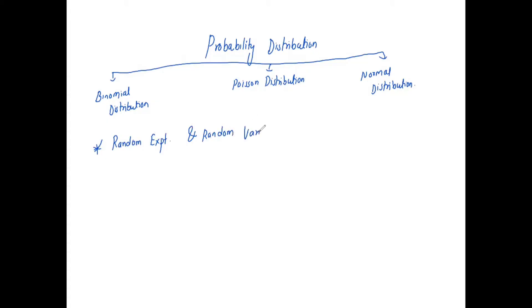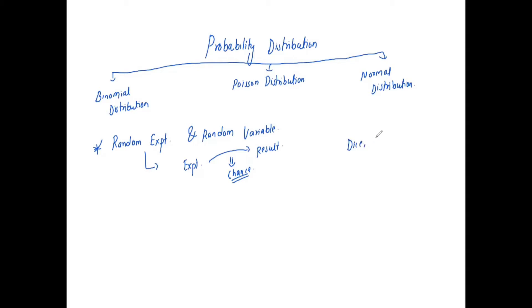What does random experiment mean? These are the types of experiments whose results depend on chance. The probability depends on the random experiment — if your results depend on chance, it is a random experiment.